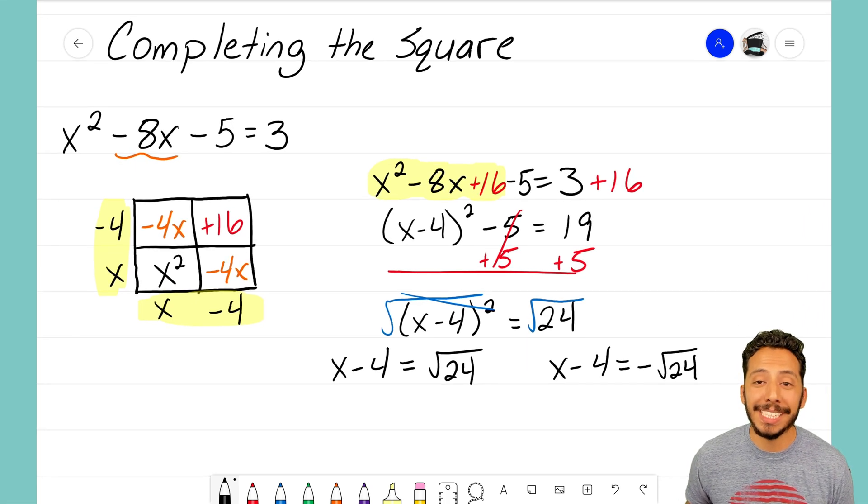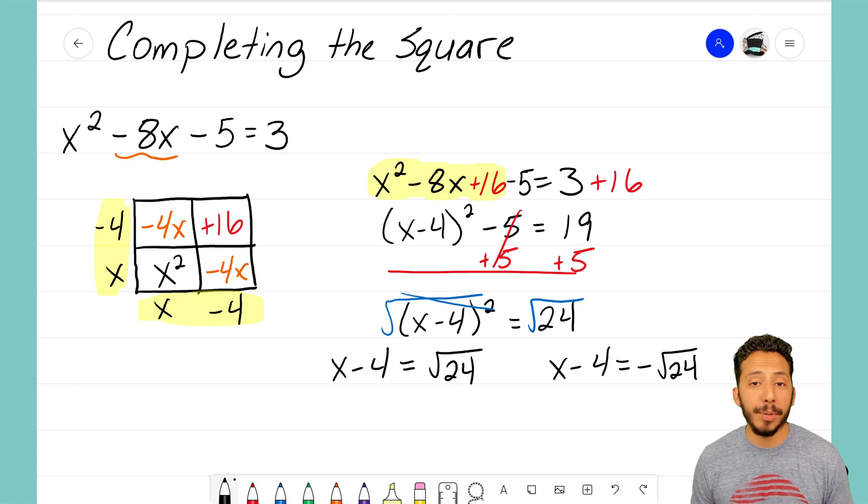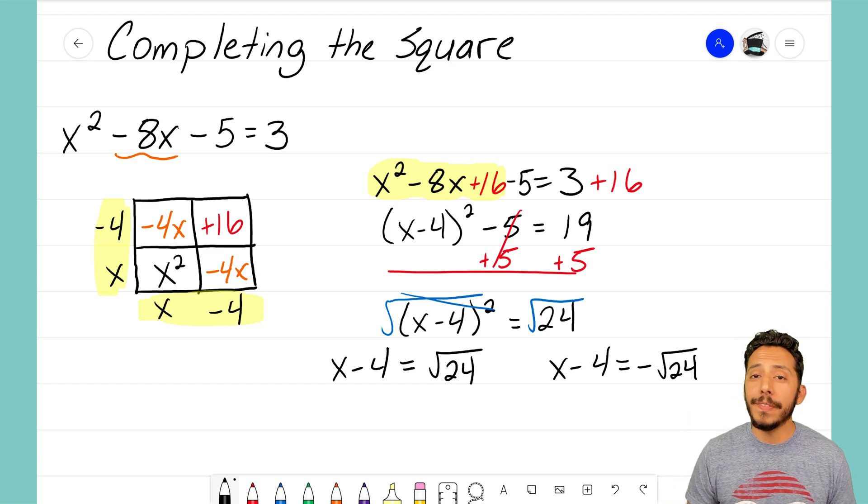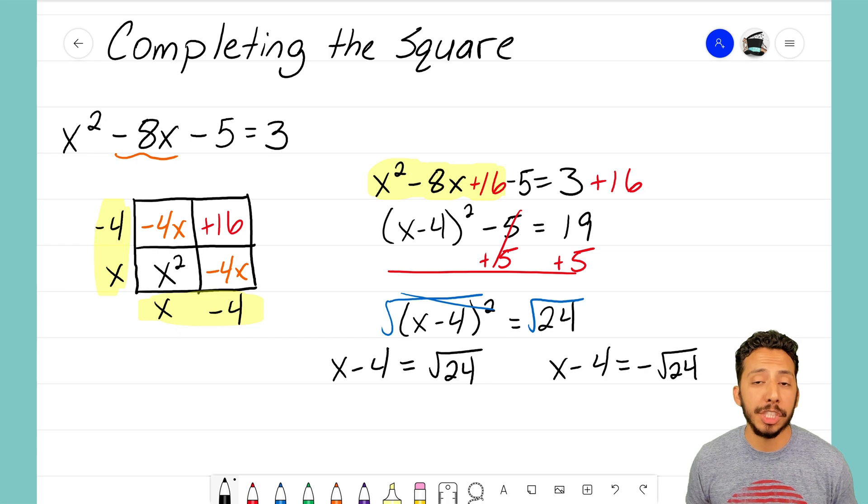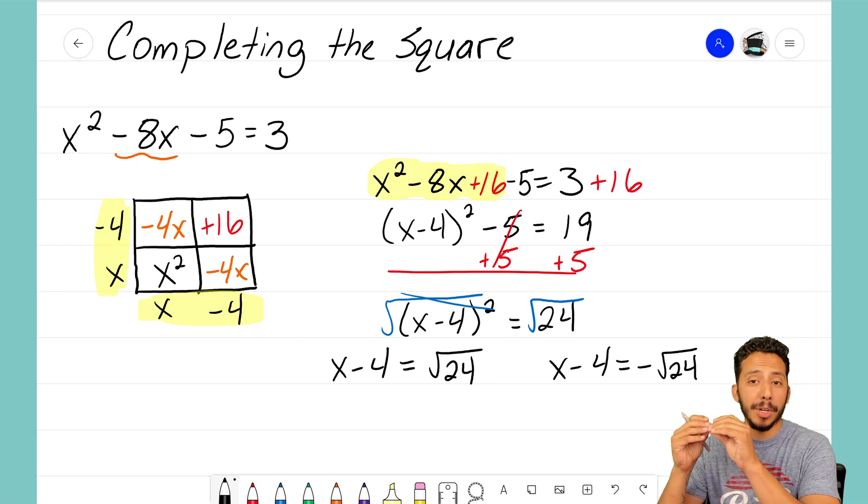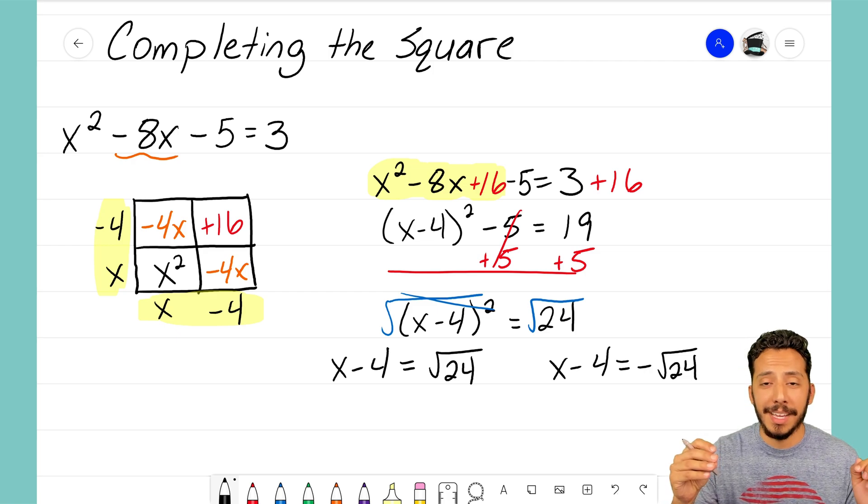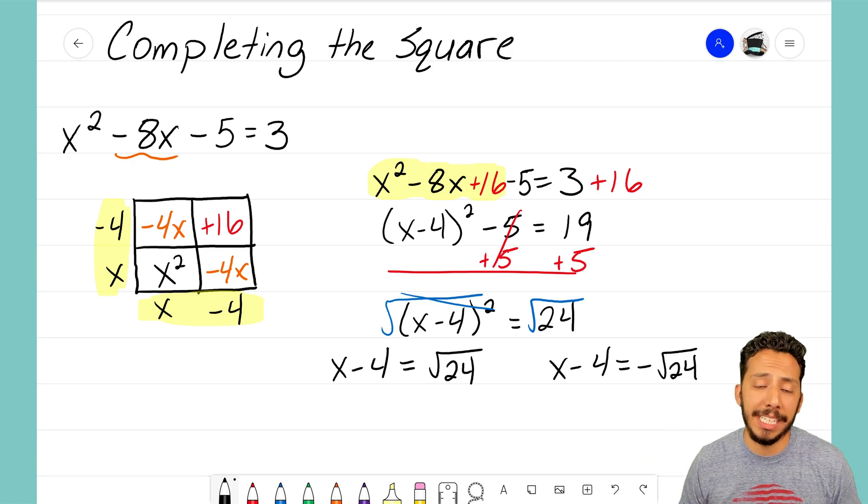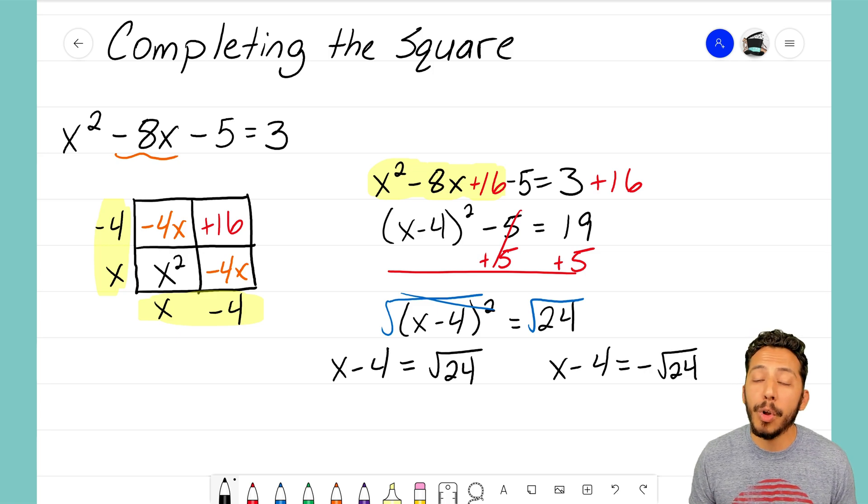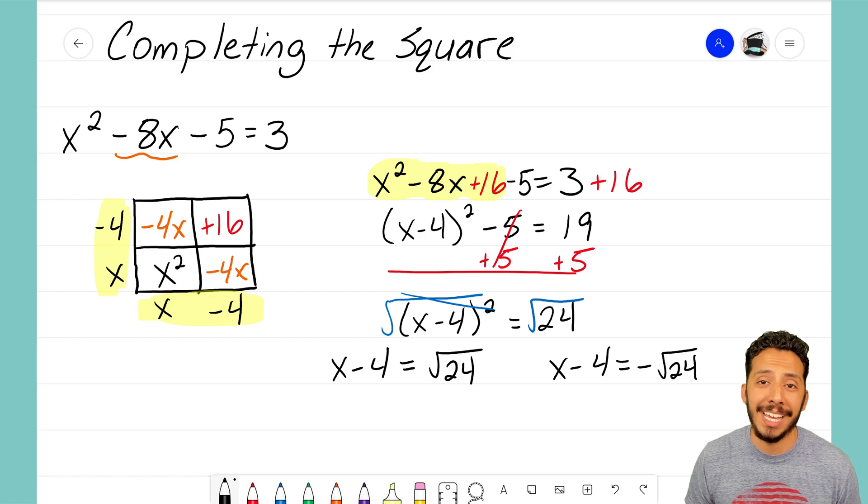Now you're probably starting to realize that 24 is not a perfect square and the square root of that is going to be an irrational number. It's going to be a number that has an infinite amount of numbers after the decimal place. And this is why we do completing the square. When you end up with irrational numbers, the box and diamond method doesn't work. We can't use the zero product property. It only works when we have whole number or fractional answers. Not for when we have irrational numbers.